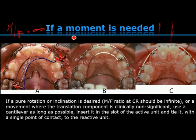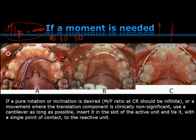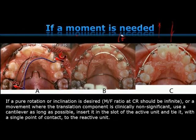If you use a force system where the moment-to-force ratio is very high — let's say 30, 14, 15, something like that — it becomes less and less easy to find the difference between the movement generated by a couple with a moment-to-force ratio of infinity and the movement generated with a very high moment-to-force ratio. In other words, let's look at this example.